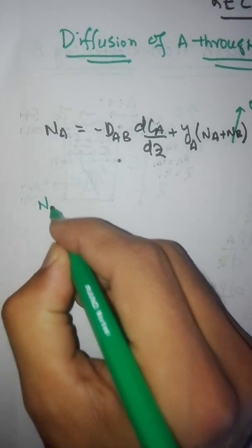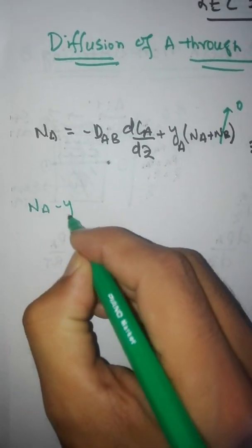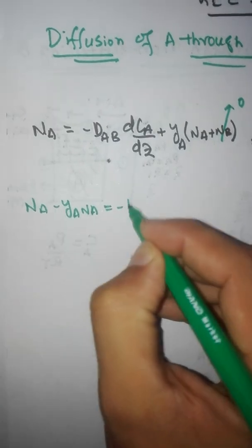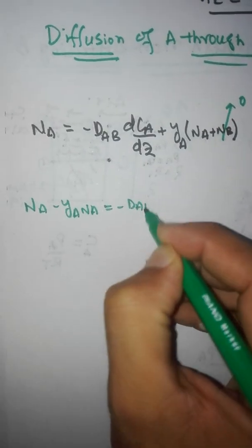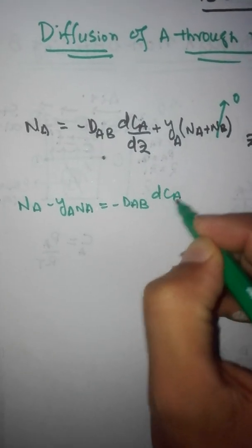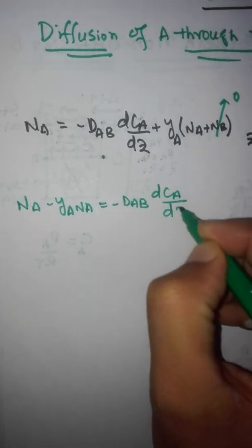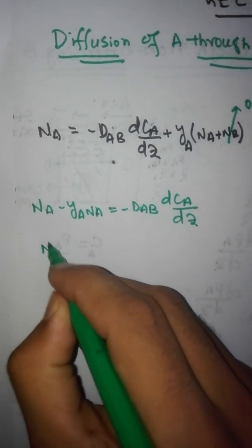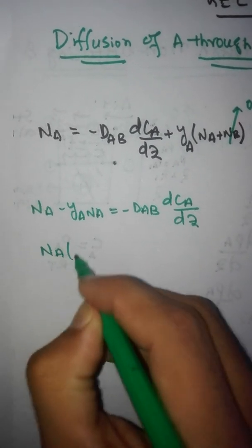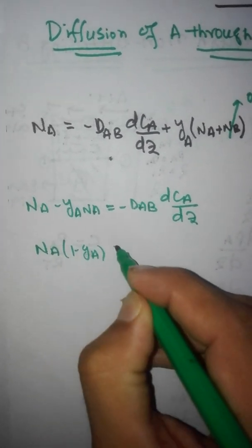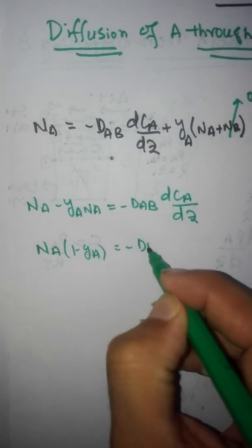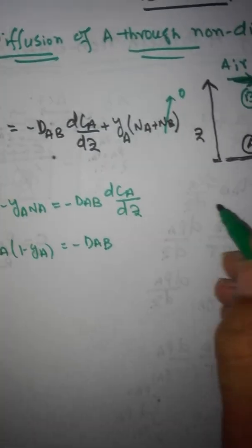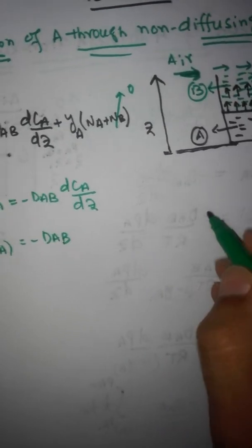Since B is stationary, the NB term equals zero, and the equation simplifies to: NA minus YA times NA equals minus DAB times DCA by DZ. Further simplifying: (1 minus YA) times NA equals minus DAB times DCA by DZ.